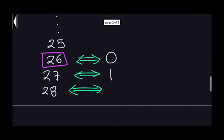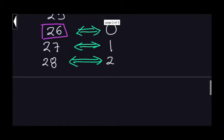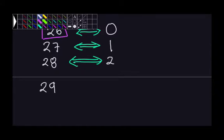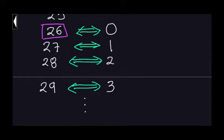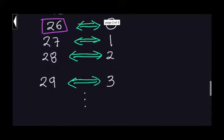Now, what do you think is going to happen with 29? If you see the pattern here, you can actually guess. 29 will be exactly the same as 3 — shifting 29 positions clockwise is exactly the same as shifting 3 positions clockwise. This follows the same pattern: 30 is going to be 4, 31 is going to be 5, and so on.